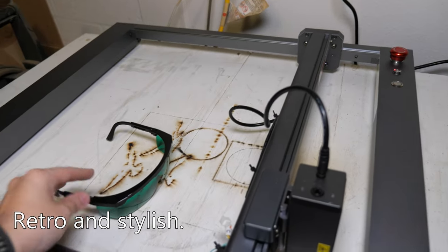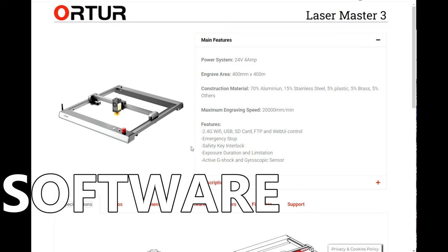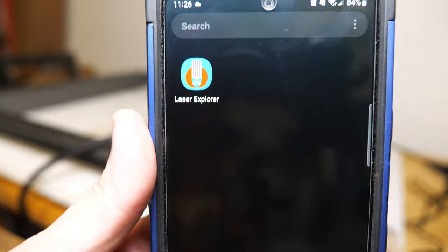In order to cut or engrave anything on the laser, you're required to download and use a secondary software. If you have a PC, you can use Laser GRBL or LightBurn. They also have a mobile-based application called Laser Explorer which allows you to use the laser with your mobile device.